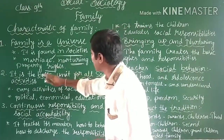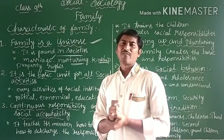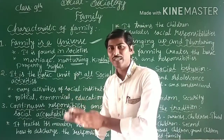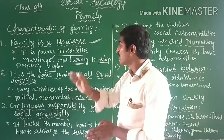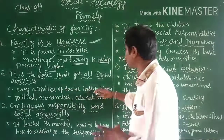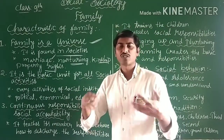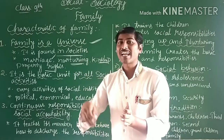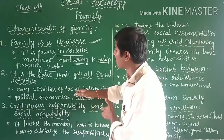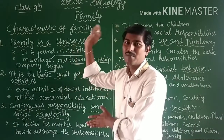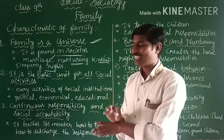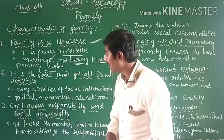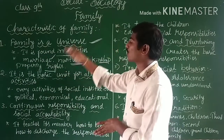The second characteristic is that the family is the basic unit for all social activities. All social activities are conducted based on the family. Every activity of every social institution — political activities, economic activities, or educational activities — all start from the family. That is why the family is considered the basic unit for all social activities.